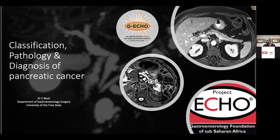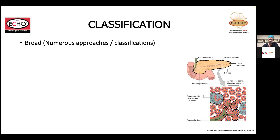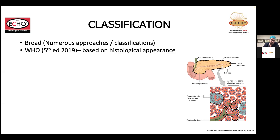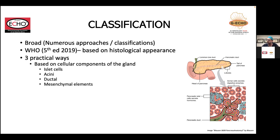Please interrupt me as we go along or put questions in the chat. We're going to start off with classification. The classification of pancreatic cancer is very broad — there are numerous approaches. Probably the most well-known is the WHO classification, currently on the fifth edition, last published in 2019, which is based almost exclusively on histological appearance. From a clinical perspective, it can be quite difficult to utilize these classifications.